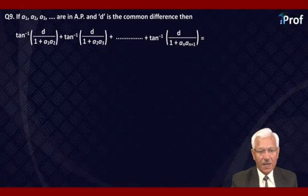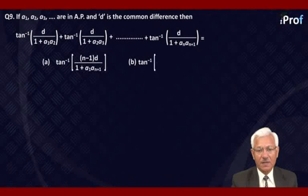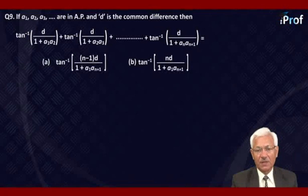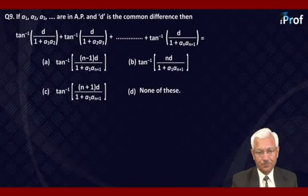Option A: tangent inverse (N minus 1)·D divided by 1 plus A1·AN+1. Option B: tangent inverse ND upon 1 plus A1·AN+1. Option C: tangent inverse (N plus 1)·D upon 1 plus A1·AN+1. And option D: none of these.